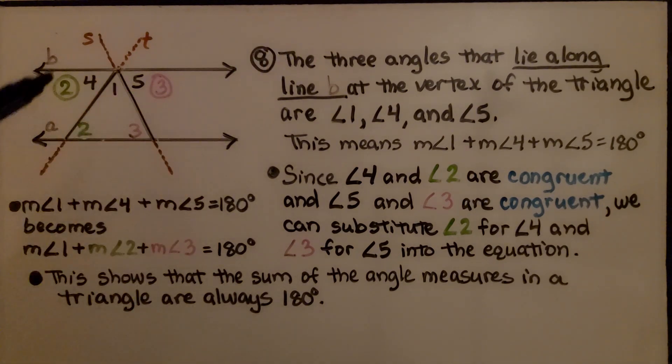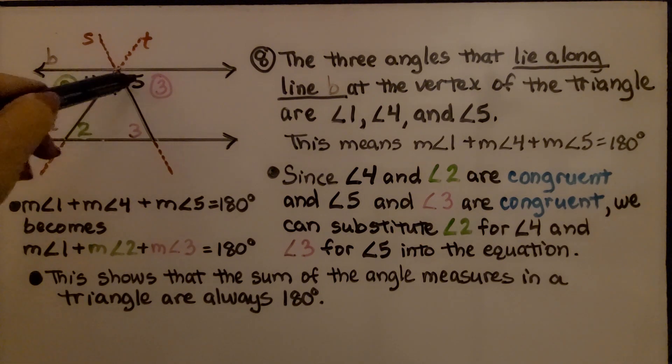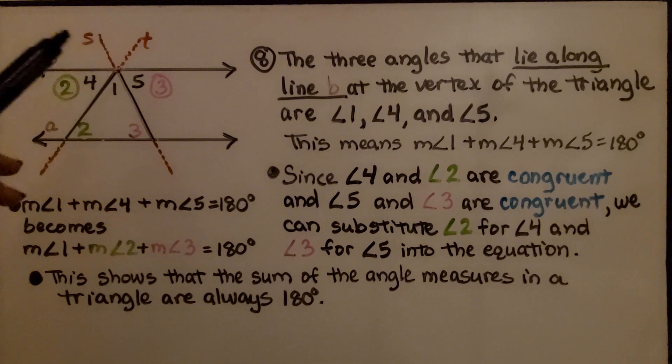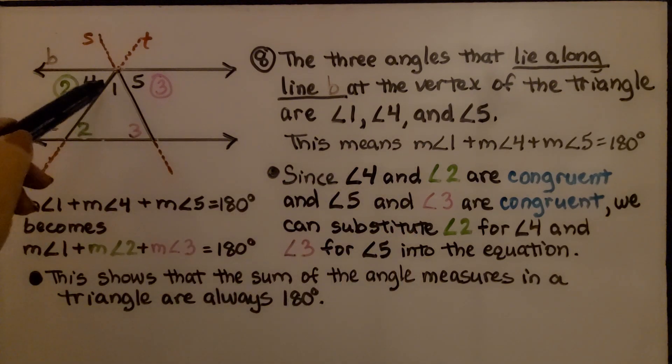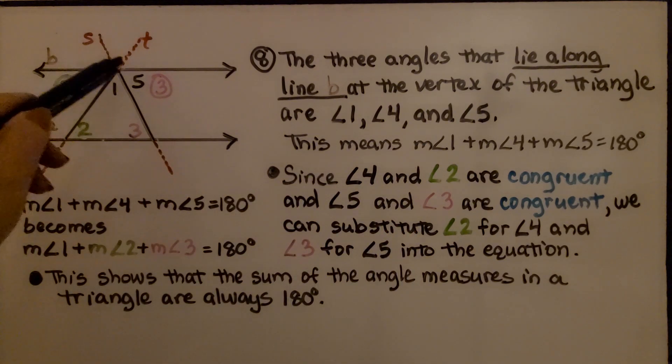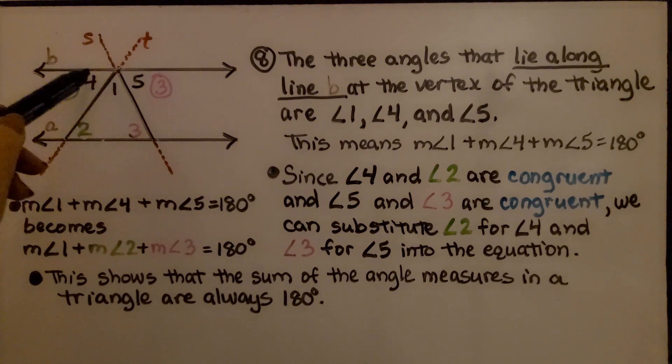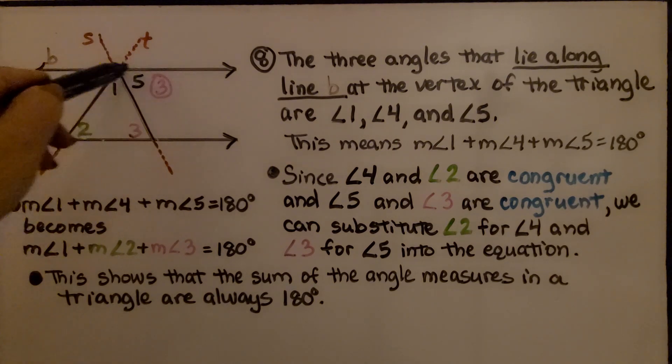The three angles that lie along line B at the vertex of the triangle are angle 1, angle 4, and angle 5. This means that the measure of angle 1 plus the measure of angle 4 plus the measure of angle 5 is 180 degrees. It's along this line.